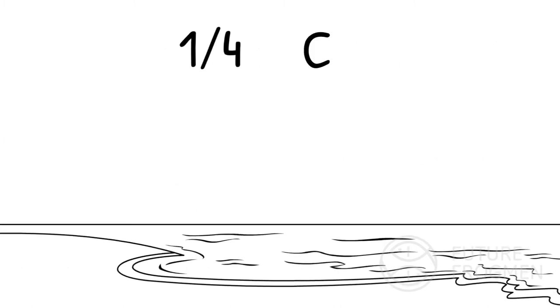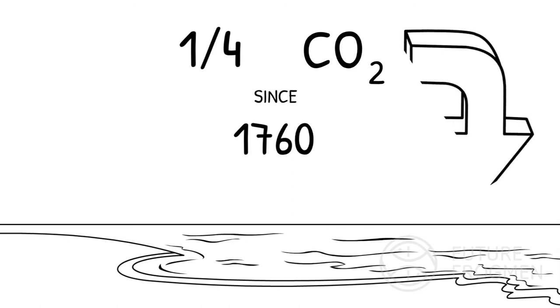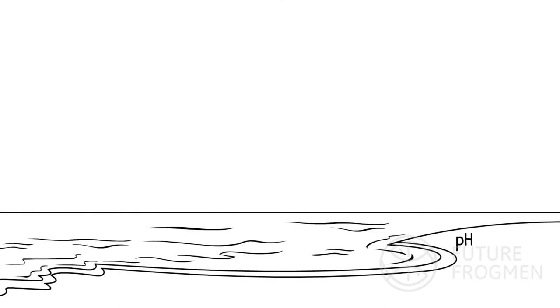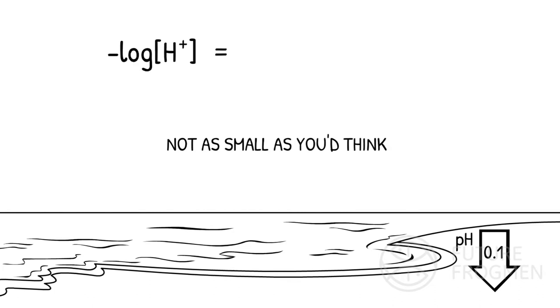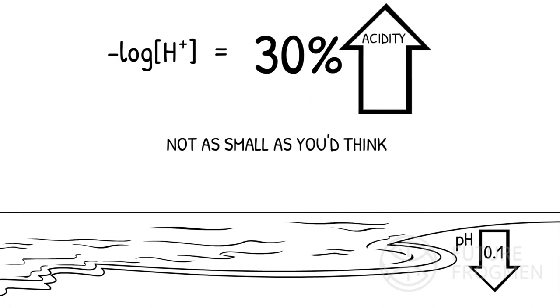About one-fourth of the carbon dioxide humans have released since the start of the Industrial Revolution in 1760 has been absorbed by the ocean. Over that time period, the ocean's pH has declined by 0.1 units on average. Since the pH scale is logarithmic, this change represents a 30% increase in acidity.